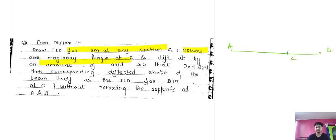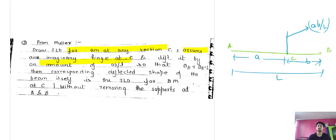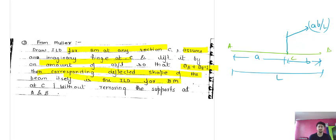When you lift in the positive direction, the displacement should be equal to a·b/L. Raising by a·b/L ensures that theta_a plus theta_b equals 1. Theta_1 will be (L - a)/L and theta_2 will be a/L, so theta_1 plus theta_2 equals 1.